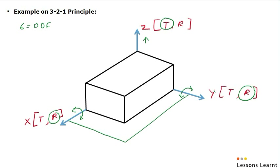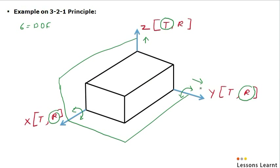Now we have to define the secondary plane. The secondary plane should be perpendicular to the primary plane. We can take this side — but it should also be the largest face compared to both sides. We can see this face is the largest, so we will consider this face as the secondary plane. Now we can see the translation in Y direction is locked, as we have constrained this face. Also, the rotation in Z is locked — this face is completely locked, so it cannot rotate in this direction.